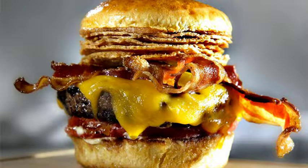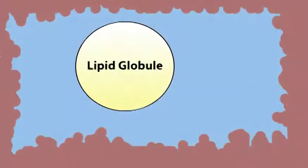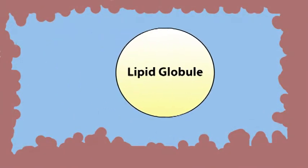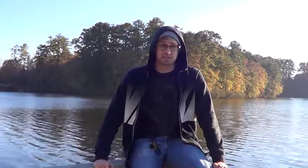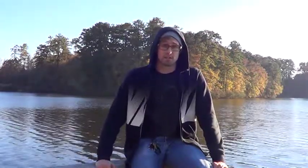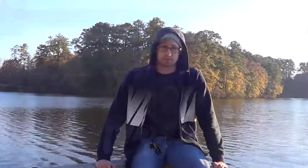When you eat foods that contain fat, the fat components travel to the small intestine to be digested and absorbed. Initially, because the fat is not soluble in the watery environment of the small intestine, you just have big fat globules floating around. This makes it hard for the fat-digesting enzymes such as lipase to efficiently grab hold of the triglyceride molecules inside the fat globules.